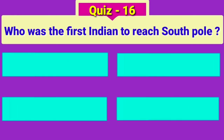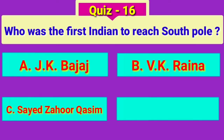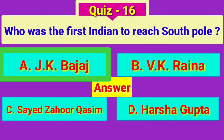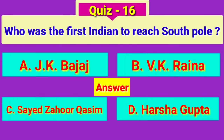Who was the first Indian to reach the South Pole? Answer: J. K. Bajaj.